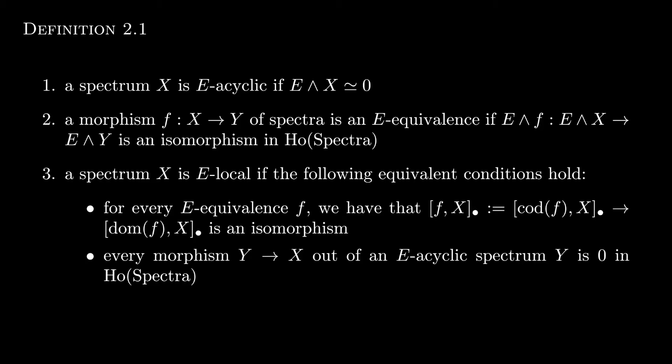The second equivalent condition is that every morphism from Y to X out of an E-acyclic spectrum Y is zero in the stable homotopy category. This really furthers our intuition. Y being E-acyclic means that we can't see it from the perspective of E. So E is also obscured from the perspective of Y. This condition says that X is also obscured from the perspective of Y. At least, when we are standing at E, x seems close enough that we can't see any maps from Y to X. For instance, because our perspective of Y is so obscured.